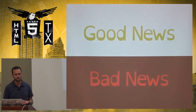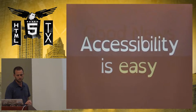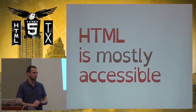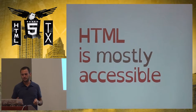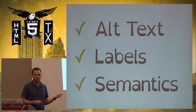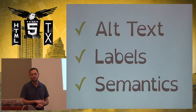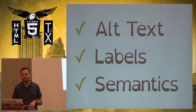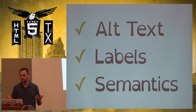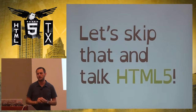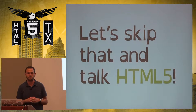I've got good news and I've got bad news. Let's start with the good news: accessibility is easy. For the most part, HTML is accessible. If you're building a simple site, it's pretty easy to make it accessible — you get your alt text on your images, you get your labels on your forms, you use proper semantics like headings. Chances are a basic site is going to be accessible. I'm going to skip that stuff because it's been covered before. There are plenty of good resources out there. I'm going to talk about HTML5 accessibility today.